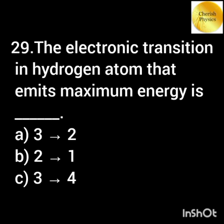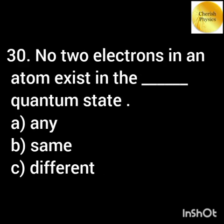The electronic transition in hydrogen atom that emits maximum energy is [answer]. According to Pauli's exclusion principle, no two electrons in an atom can exist in the same quantum state.